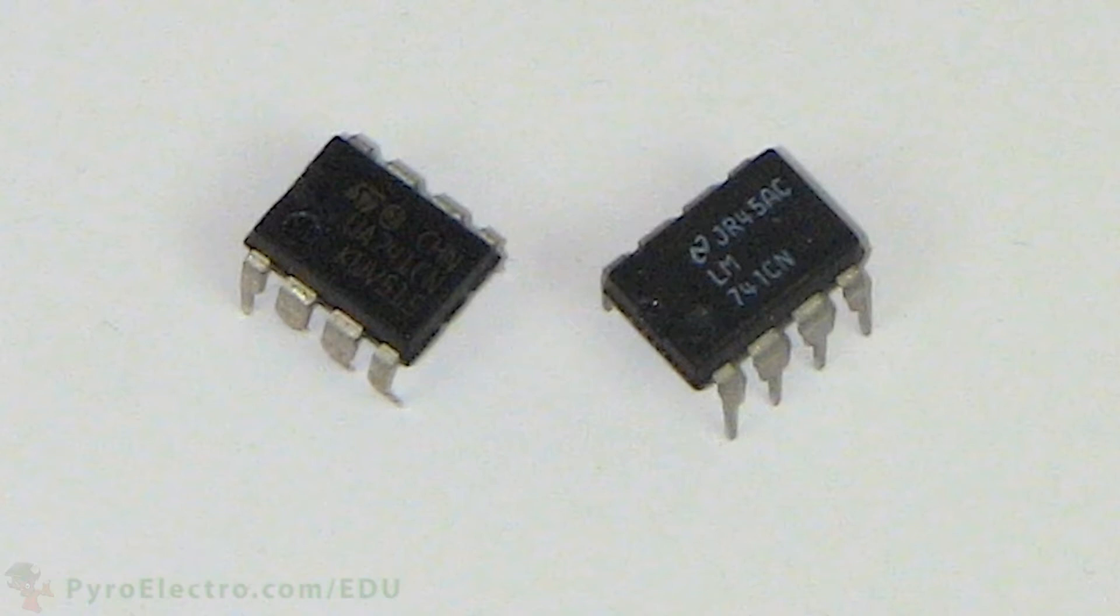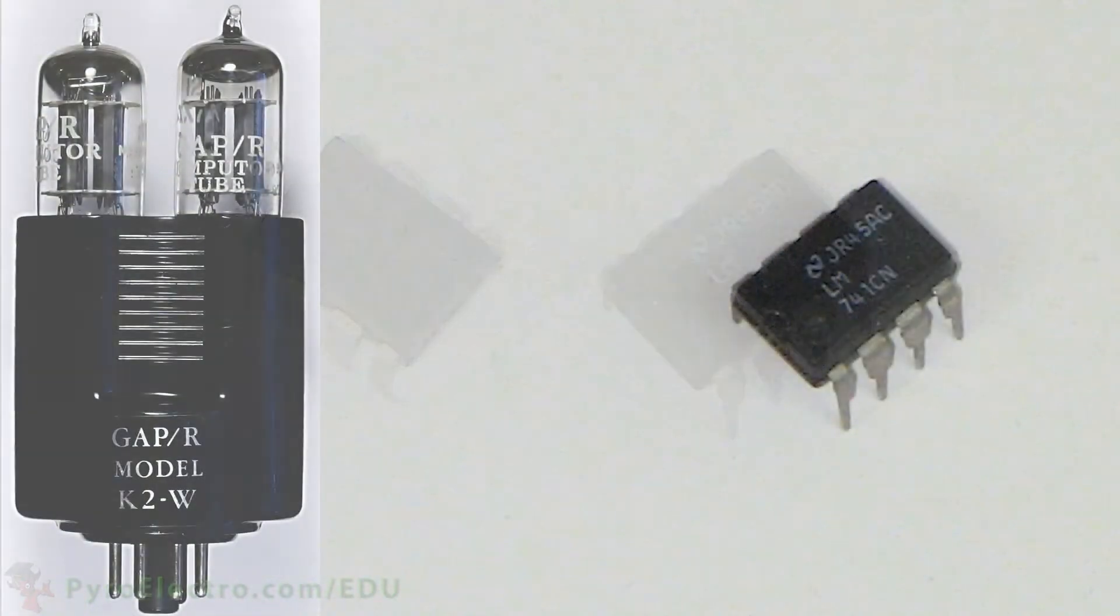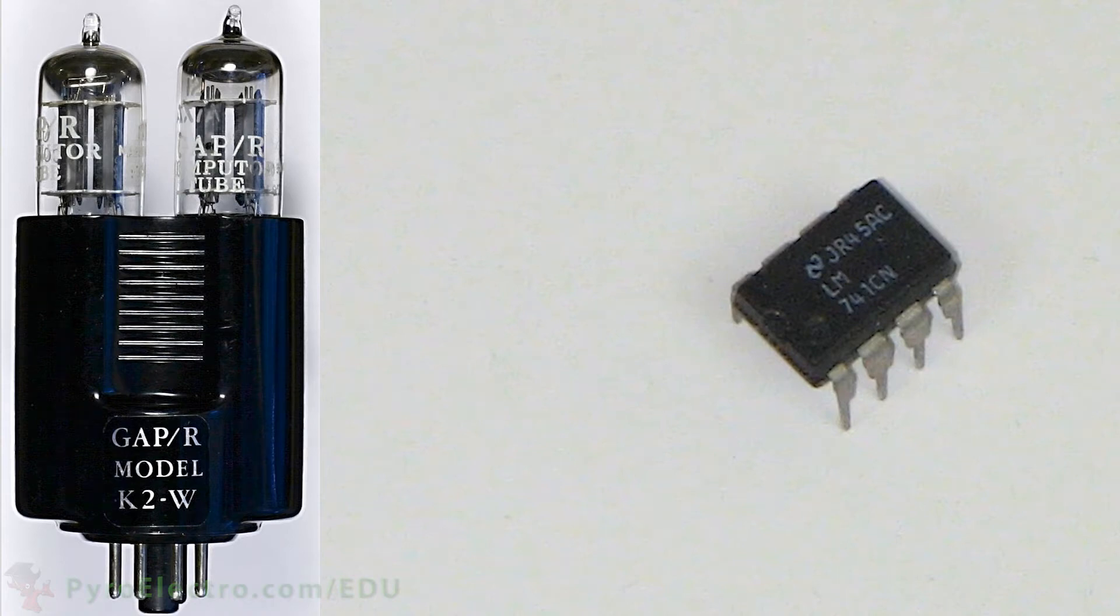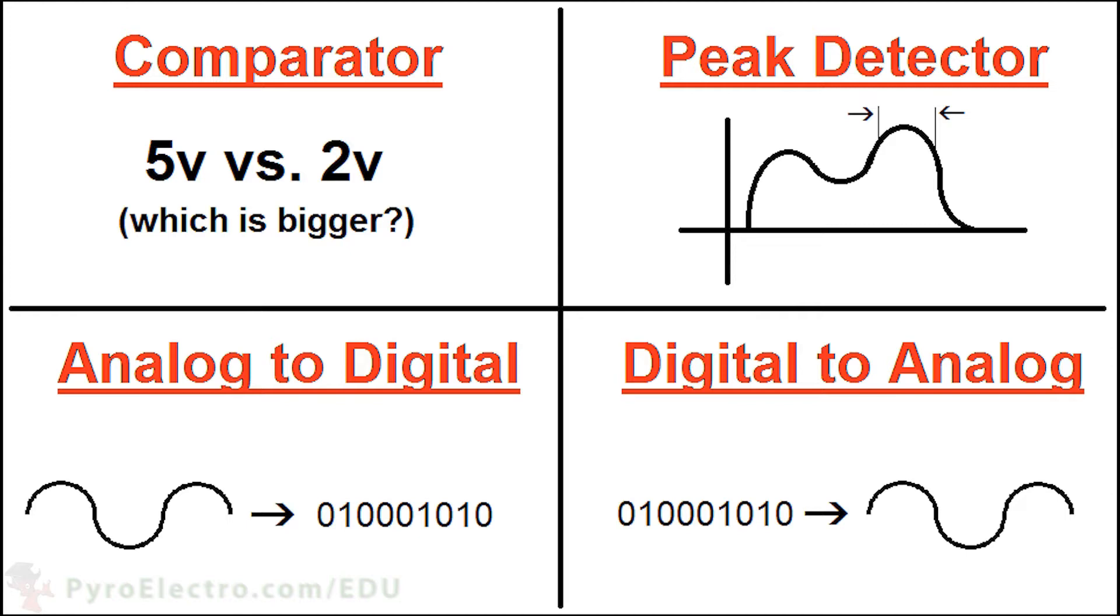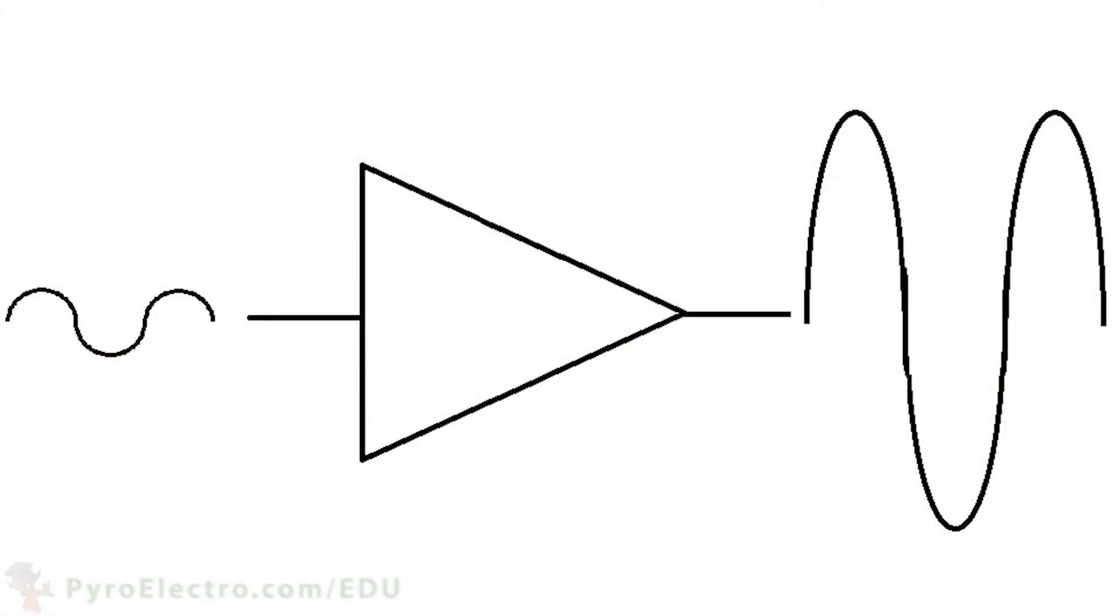We were first introduced to the operational amplifier, or op-amp for short, in the Introduction to Modern Electronics course. In that lesson, we went through what an op-amp can be used for, like a comparator or digital to analog converter. But the main purpose of an op-amp is to amplify signals.